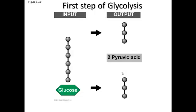To set you up for understanding fermentation, we're going to talk about glycolysis, and this here is the first step. This will be in all of the lectures so you can really get a handle on what's happening in glycolysis. On the left, this simple chain is representing glucose, even though we know that glucose has a structure more like the green hexagon here. To better understand what's happening in glycolysis, this will be a representation of glucose. In the first step, glucose is basically broken down from a six carbon molecule into two three carbon molecules. These are each pyruvic acid.